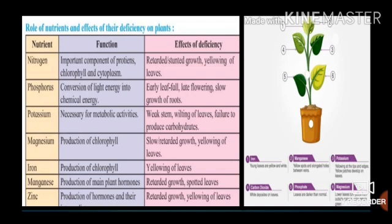Magnesium also plays a role in production of main plant hormones; deficiency causes retarded growth and spotted leaves. Zinc: involved in production of hormones and their intermediates; deficiency causes retarded growth and yellowing of leaves. These are the roles of nutrients and the effects of their deficiency on plants.